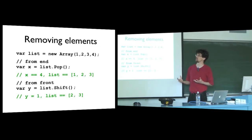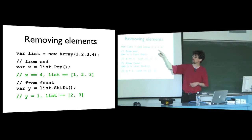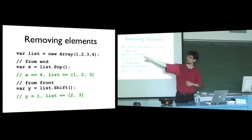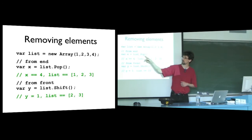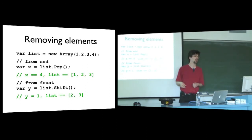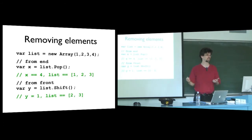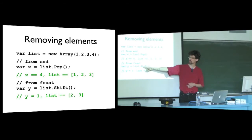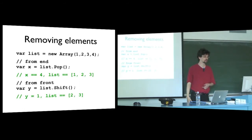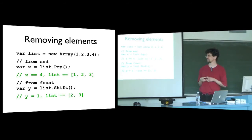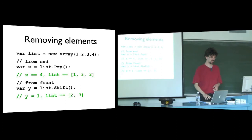We can remove elements using 'pop' and 'shift'. Starting with a list of (1, 2, 3, 4), the pop method removes from the end: 'x = list.pop()' sets x to 4 and leaves the list as (1, 2, 3). The shift method removes from the front: 'y = list.shift()' sets y to 1 and leaves the list as (2, 3). So we can add and remove elements from either end of a list. There's also a method for removing things from the middle — removeAt — but no method for inserting at the middle.